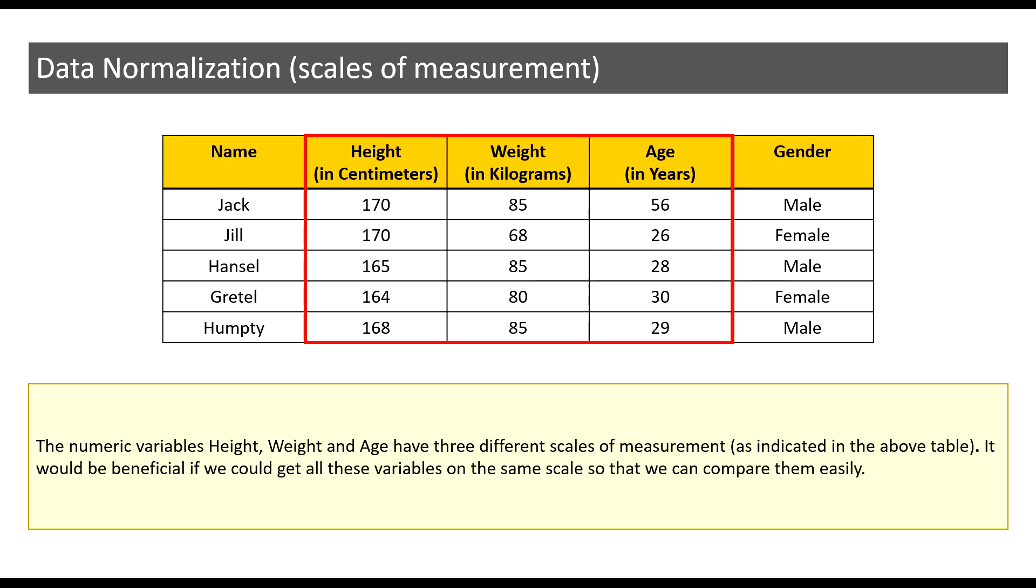Height, which is measured in centimeters, weight, which is measured in kilograms, and age, which is measured in number of years. All these three variables have different scales of measurement. Now is there a way to get these variables on the same scale so that it would be easier for us to compare these variables?